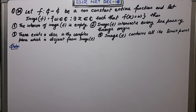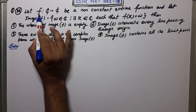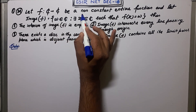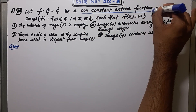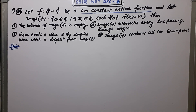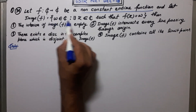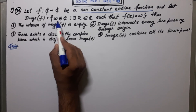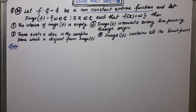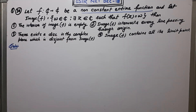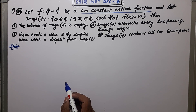Welcome guys, this is question number 34 of NET December 2018. It's a question from complex analysis. Let f from C to C be a non-constant entire function. The image of f contains all elements w such that there exists z belonging to C with f(z) equal to w. This is the basic definition.